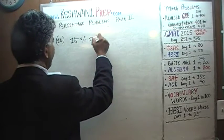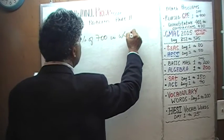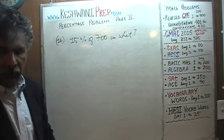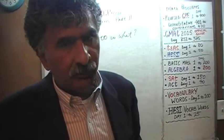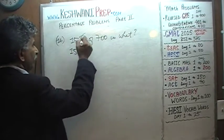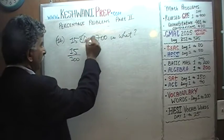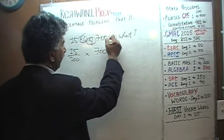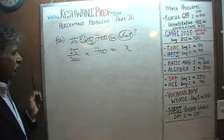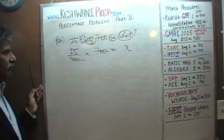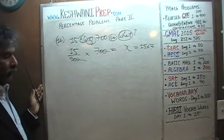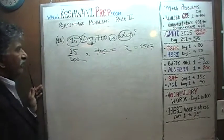Number 16: 15% of 700 is what? Algebraically: 15 over 100, times 700, equals x. Divide top and bottom by 100: 100 goes away and we get 15 times 7. Now let's do the quick way.